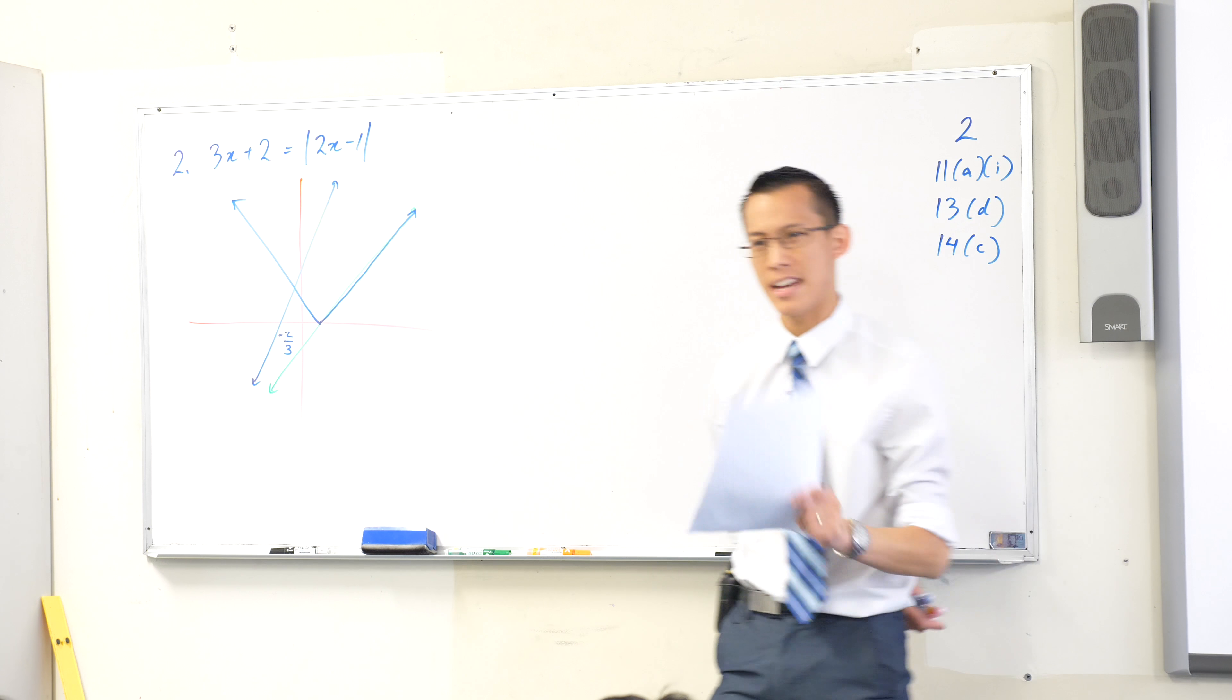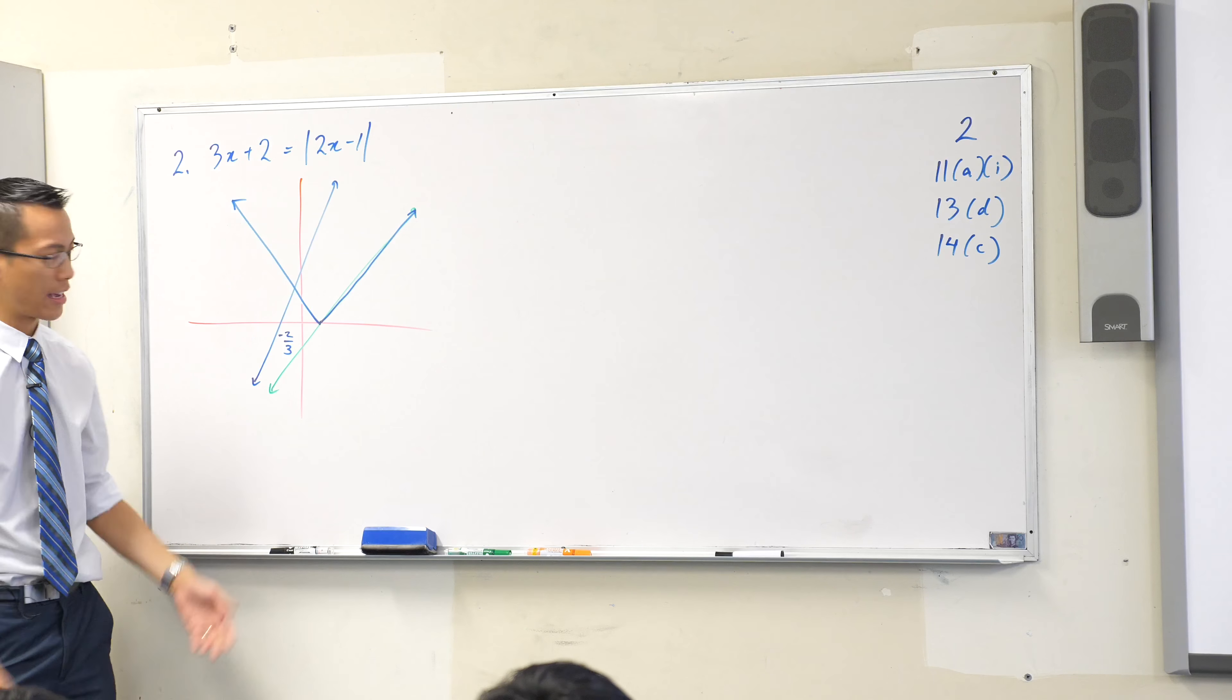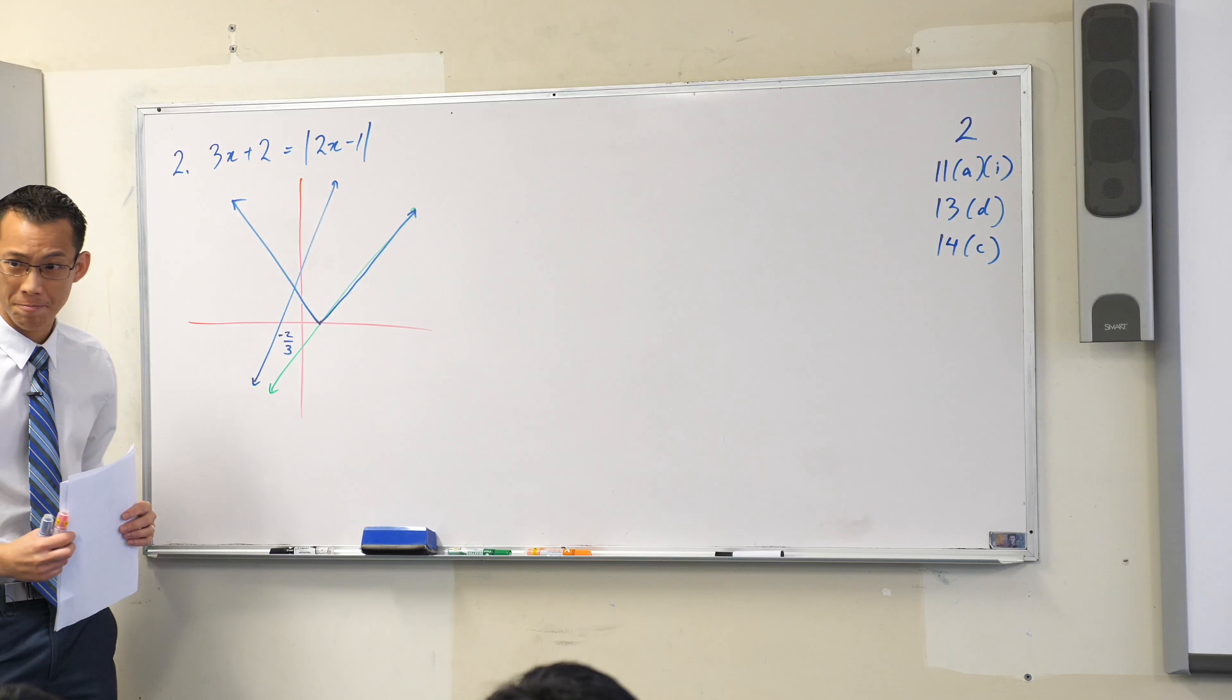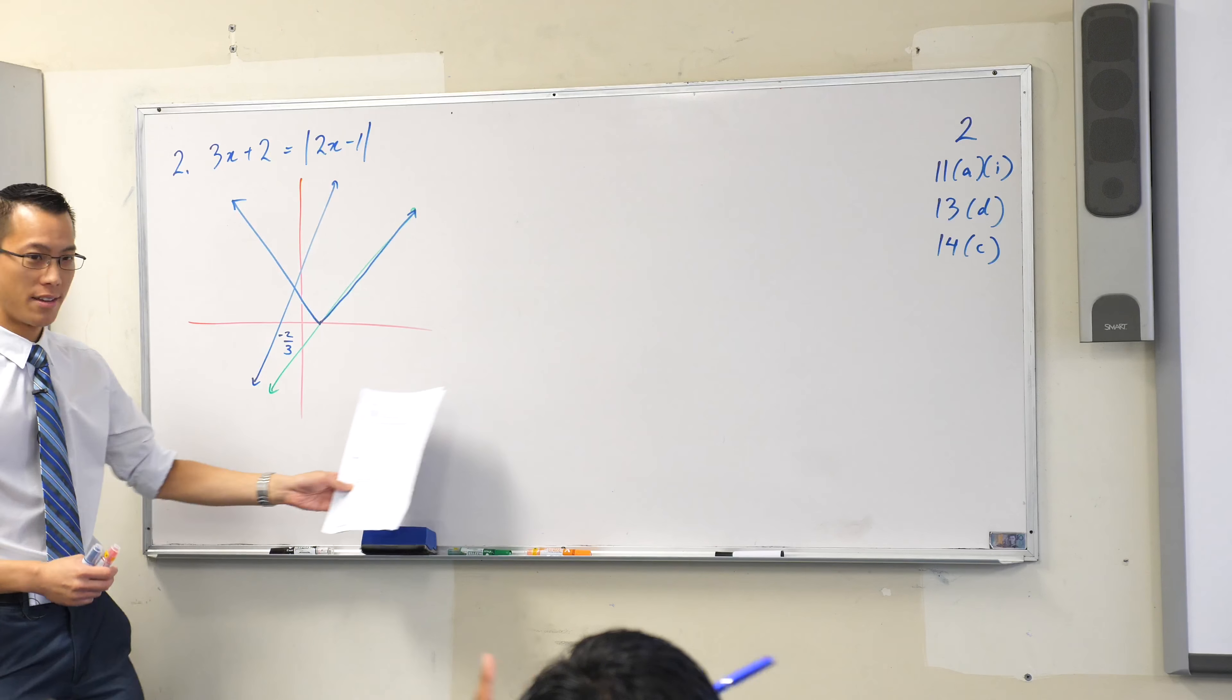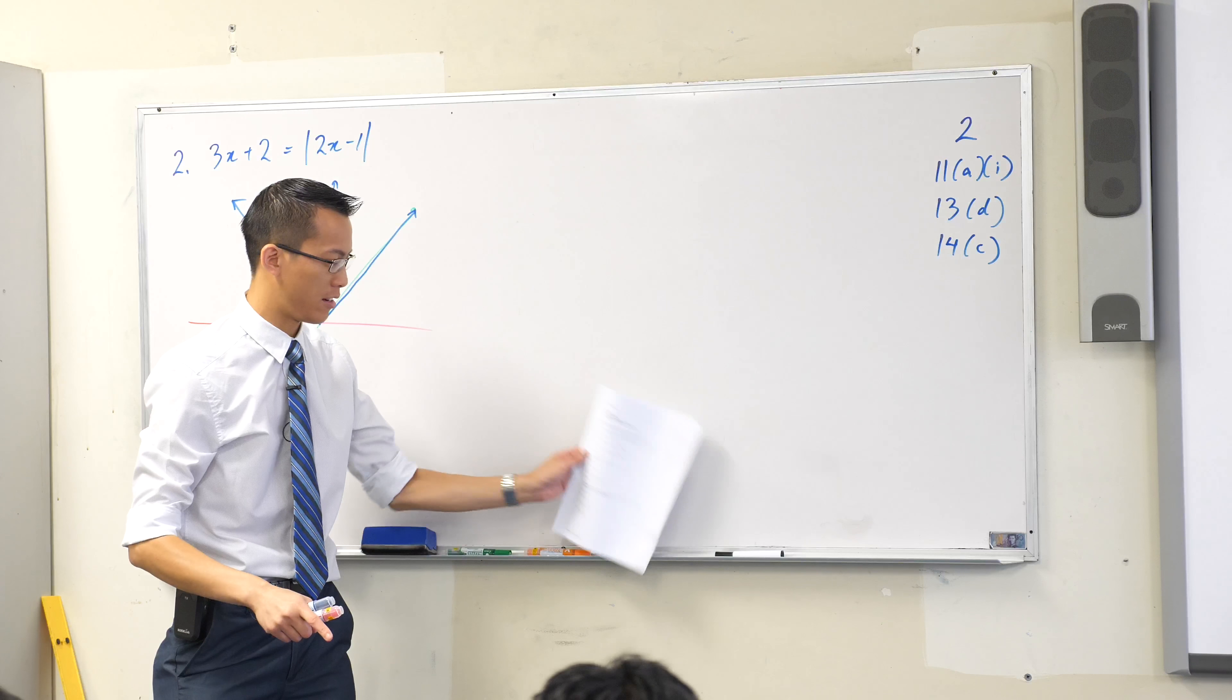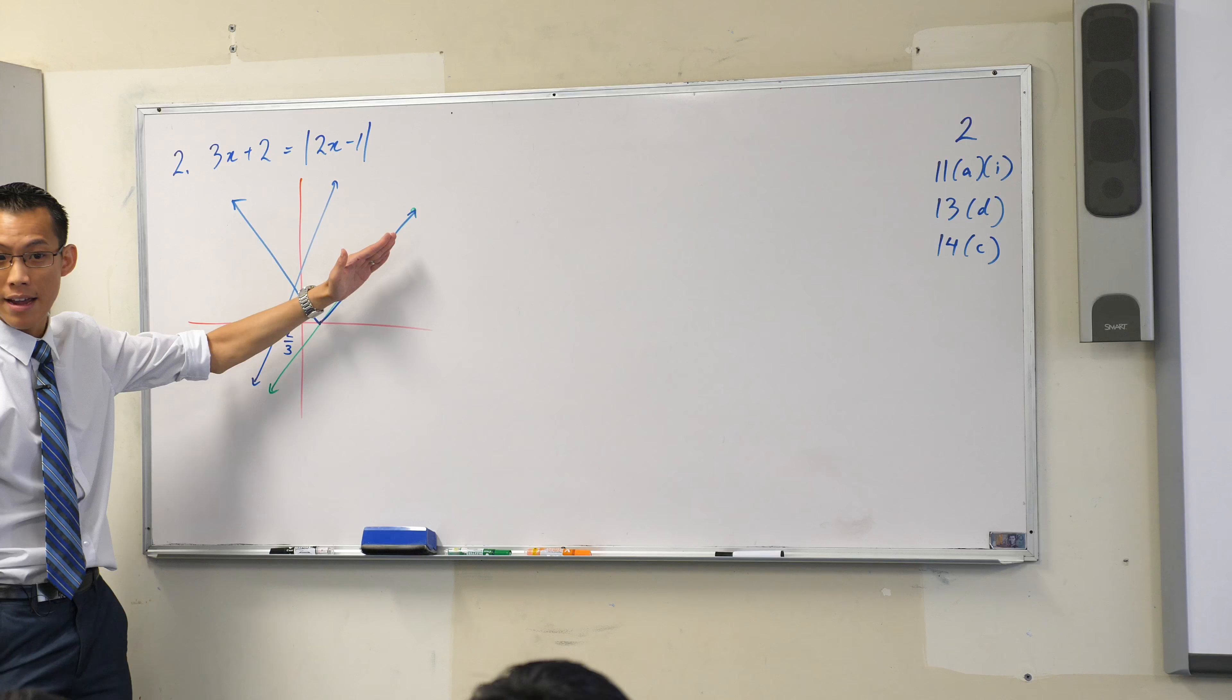Which other one can I disregard? I can disregard D. Now this takes a little more thought. Why can't there be two solutions? Like I know, I don't have the whole graph, how do I know there isn't a solution somewhere else? It's about the steepness, right? This is why I asked you about that at the beginning. This is steeper than this, right?